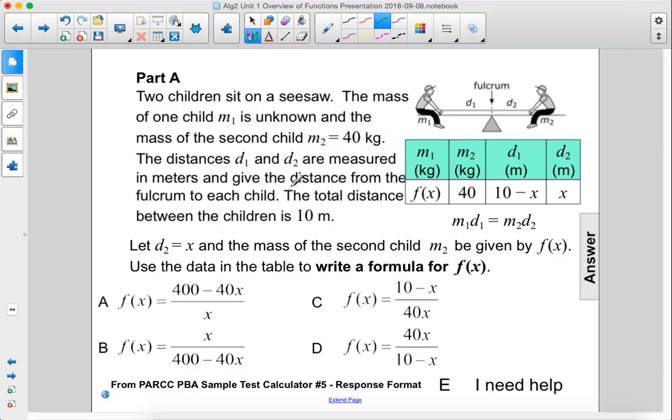The distances, D1 and D2, are measured in meters and give the distance from the fulcrum to each child. The total distance between the children is 10 meters.